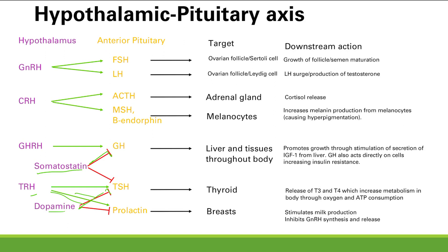The key memory tip: there are six main anterior pituitary hormones that cause the most effects — FSH, LH, ACTH, GH, TSH, and prolactin. These are all high-yield topics with a lot of detail. Make sure you know everything here.